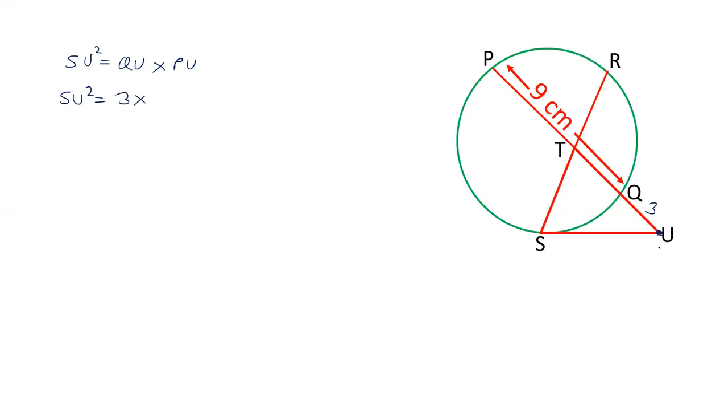Now PU is PQ plus QU, and that will be equal to 9 plus 3. So SU squared equals 3 times 12, which equals 36. So the value of SU will be 6 centimeters.